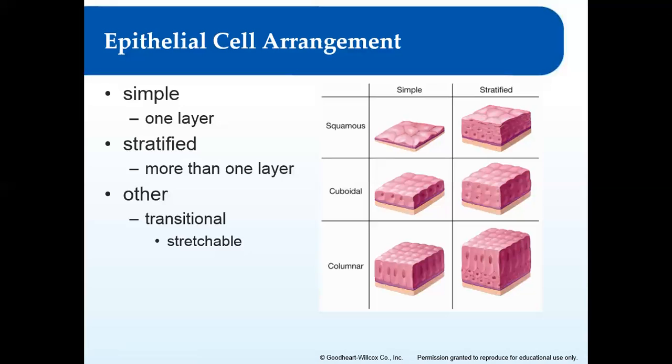The last type of epithelial tissue is transitional tissue. It does exactly what it sounds like — it's transitional, meaning it changes or stretches depending on what's going on. This is particularly found inside the urinary bladder.